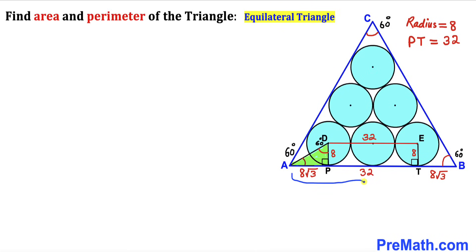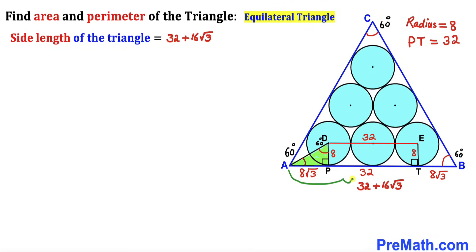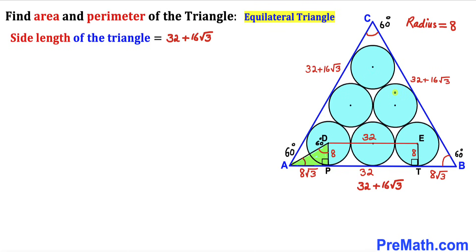The total length AB is the sum of all individual lengths: AP + PT + TB = 8√3 + 32 + 8√3 = 32 + 16√3. Since AB is the side length of equilateral triangle ABC, the side length of triangle ABC is 32 + 16√3, and all three sides are equal to this value.